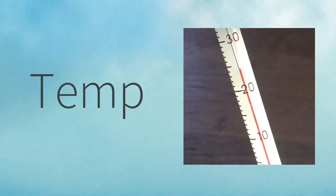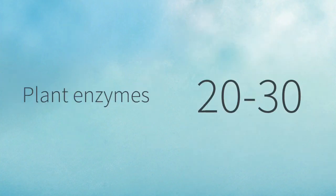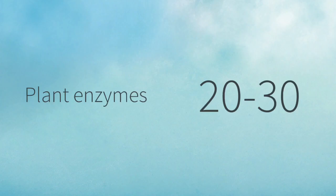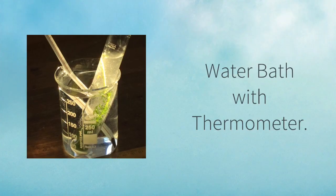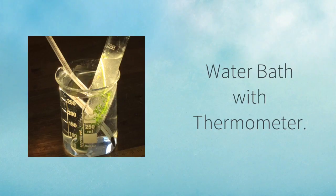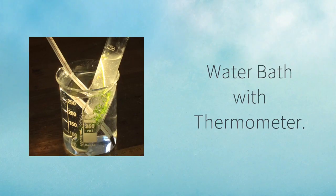The temperature was maintained at a constant 25 degrees Celsius. You know that plants have an optimal temperature range of between 20 and 30 degrees Celsius. You must say that the temperature was maintained at 25 degrees by using a water bath and this was checked using a thermometer.